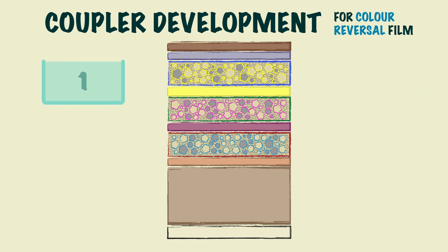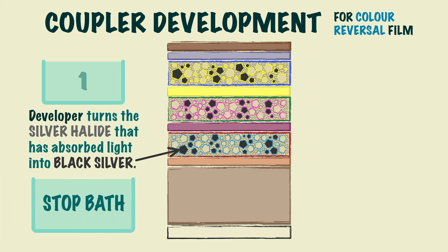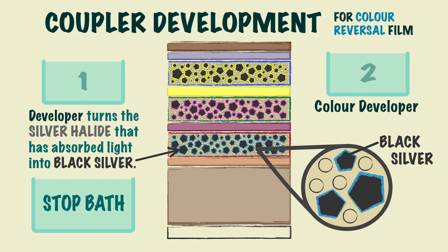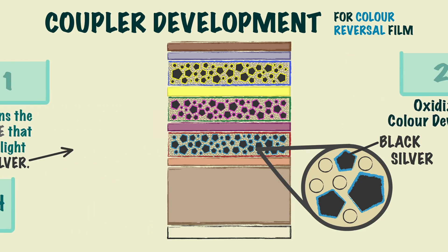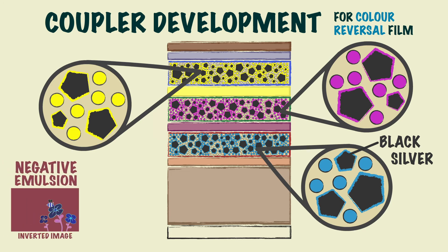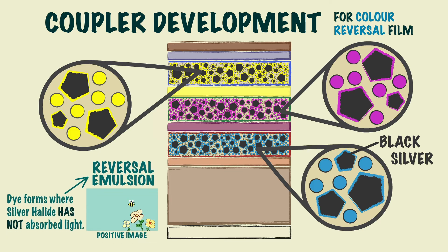For the first part, the developer turns the silver halide that has absorbed light into black silver. This process is then stopped with the stop bath. For the second part, colour developer is used to reduce the remaining silver halide to black silver. This reaction then oxidises the developer and causes the imaging couplers to form dyes alongside the black silver formed in the second reaction. This is different to negative emulsion, because instead of forming next to the silver halide that has absorbed light, the dye forms where the silver halide has not absorbed light, therefore creating accurate colour representation.